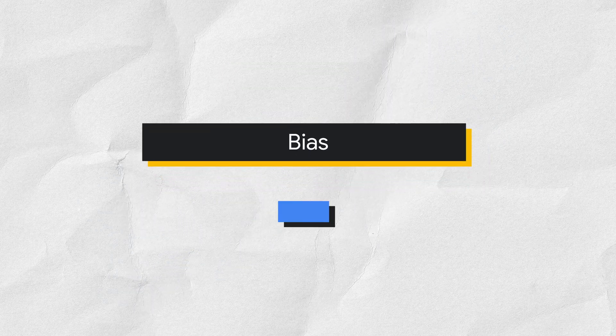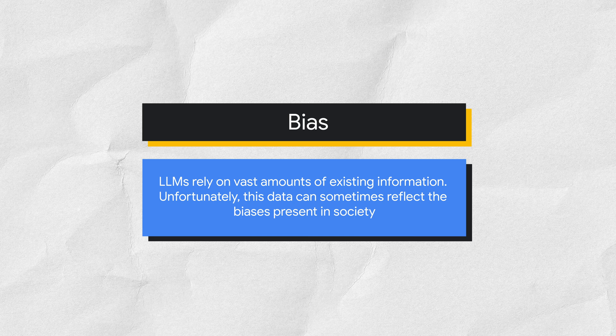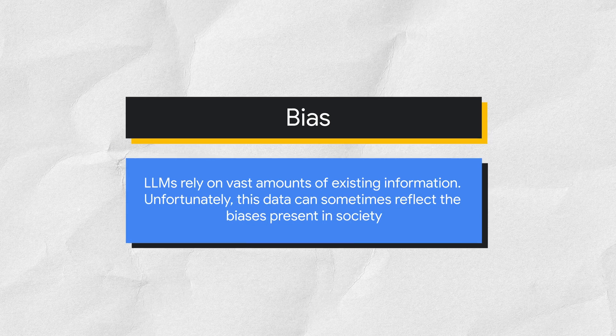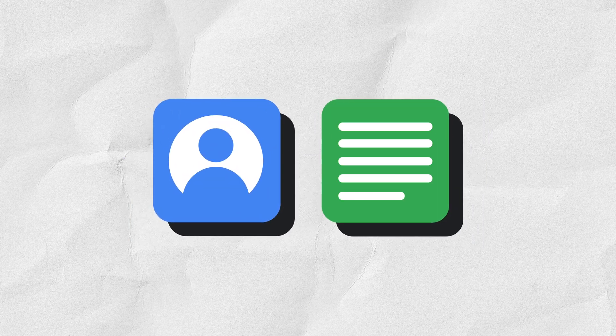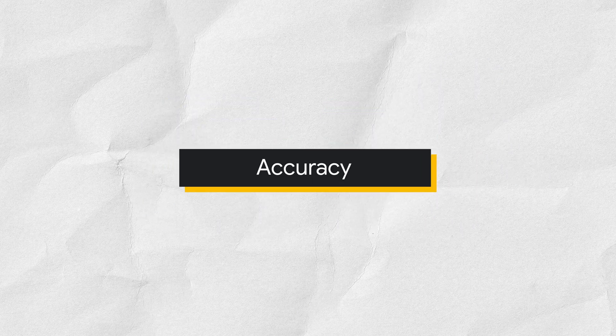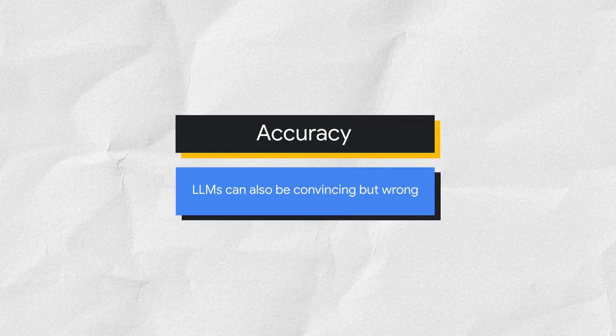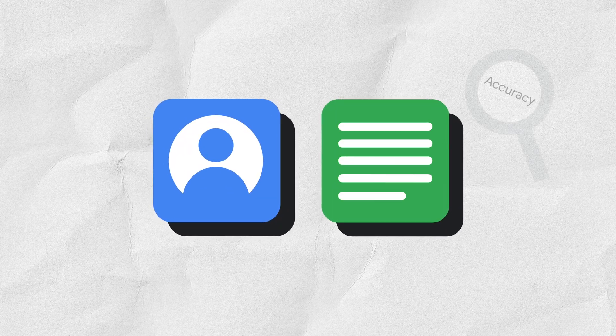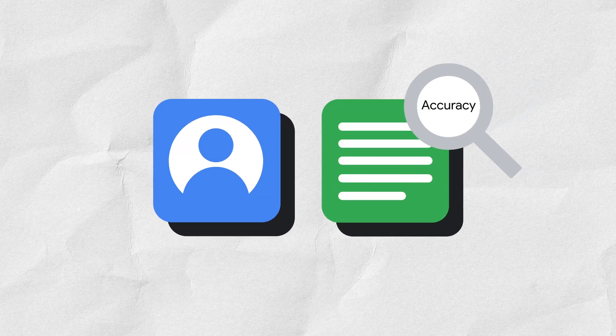Regarding bias: LLMs rely on vast amounts of existing information. Unfortunately, this data can sometimes reflect the biases present in society. As a user, you play a crucial role in evaluating Gemini's output for potential bias before using it. Regarding accuracy: LLMs can also be convincing but wrong. They can hallucinate, which means they provide outputs that seem confident and correct but are actually inaccurate. Double-check any facts — Gemini can support you in this process by using the Double-Check Response feature.